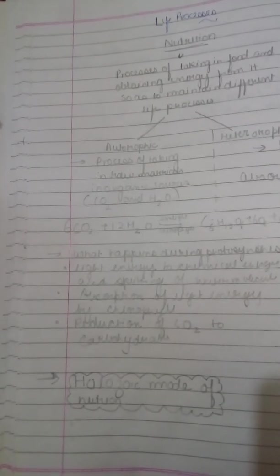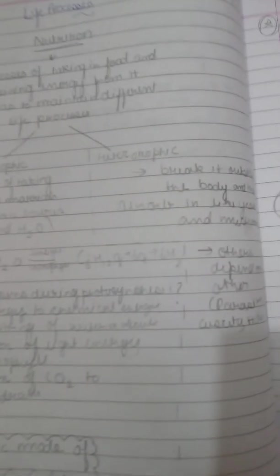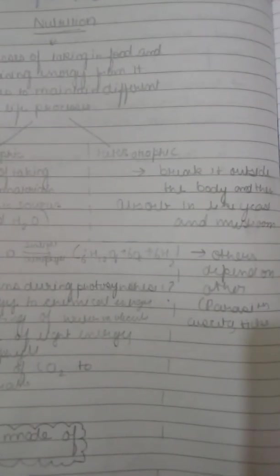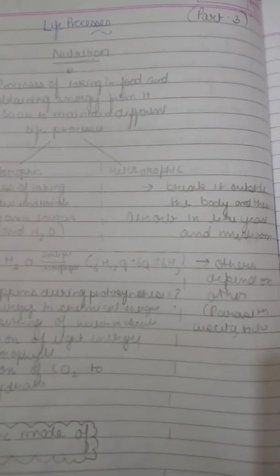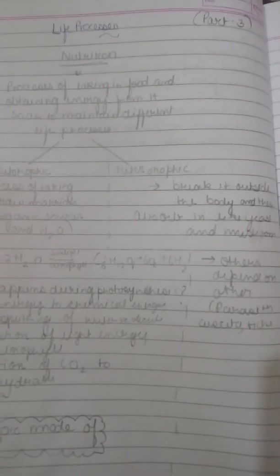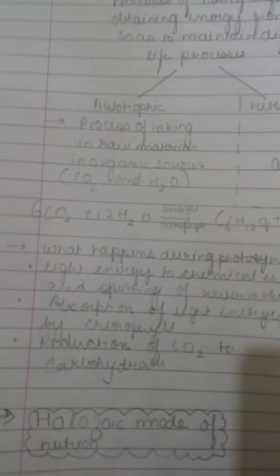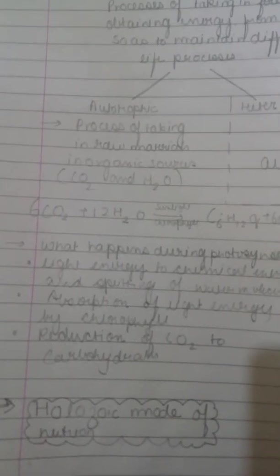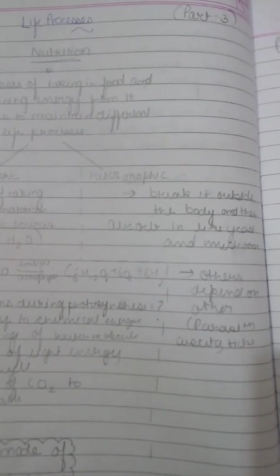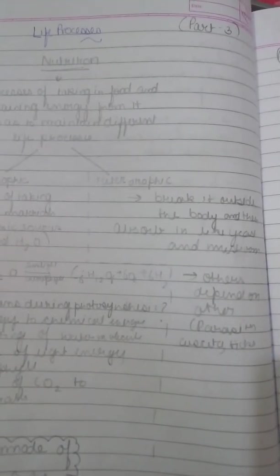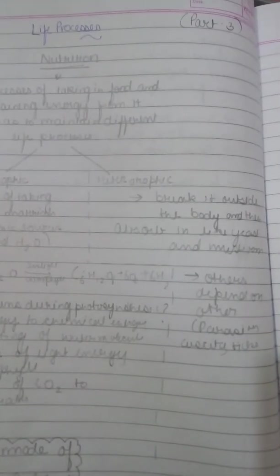Now I come to the heterotrophic mode of nutrition. Before starting, I would like to tell you that heterotrophic mode of nutrition is also called holozoic mode of nutrition. The spelling is H-O-L-O-Z-O-I-C. Heterotrophic organisms are basically dependent on other organisms for their food.